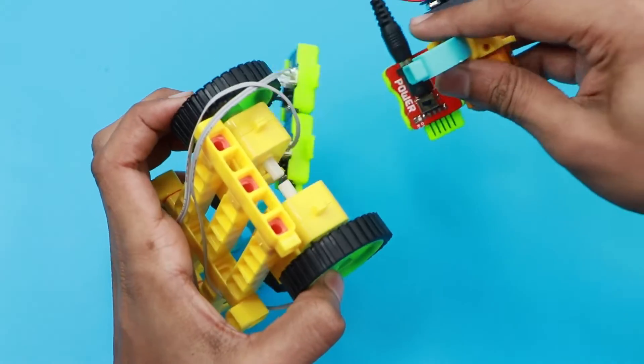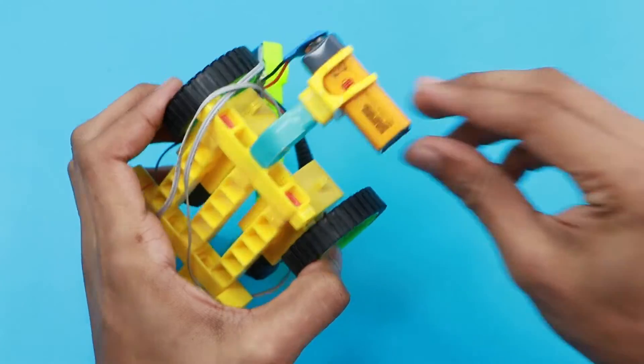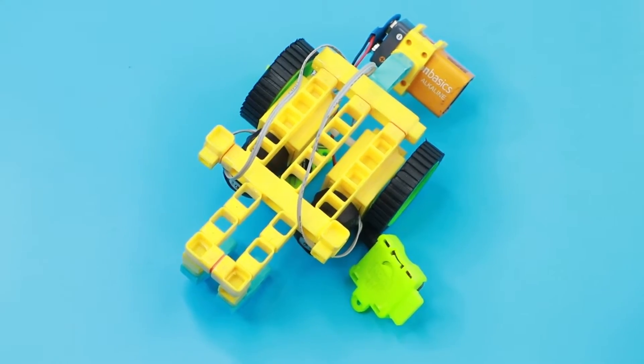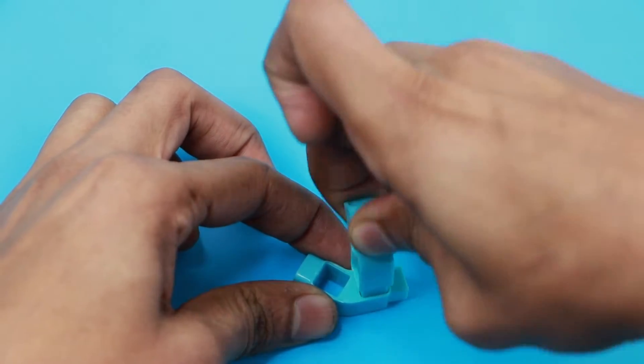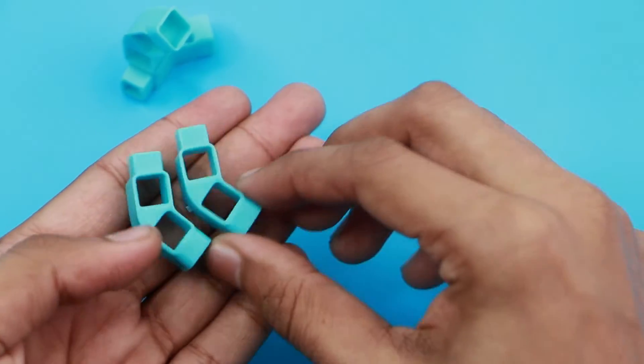Now let us attach a battery holder at the end. Let's create block support using these 45 degree to hole elbows to hold the circuit at its place.